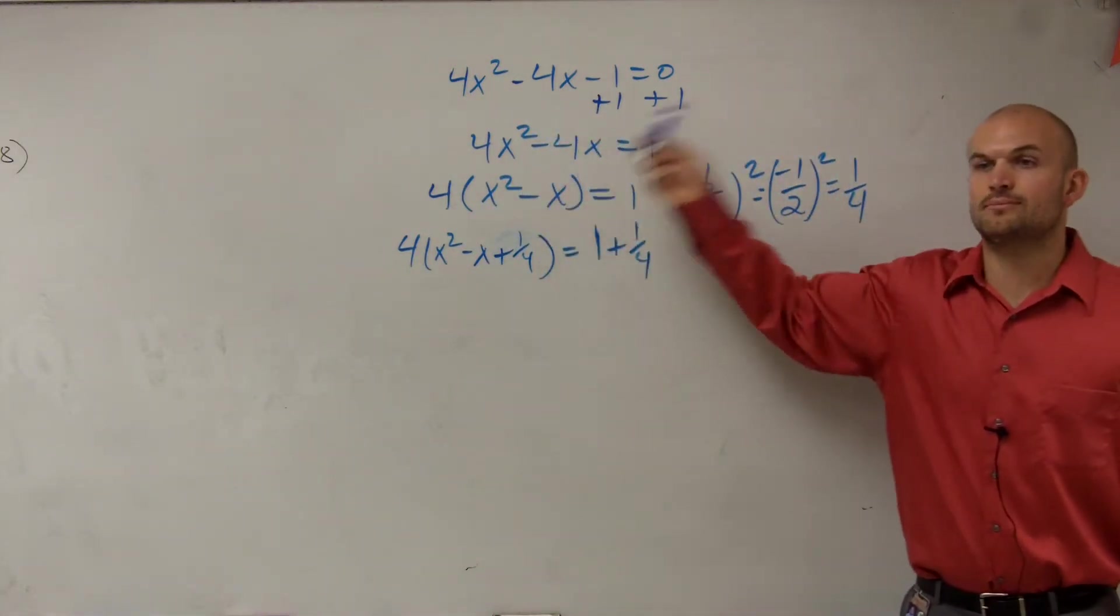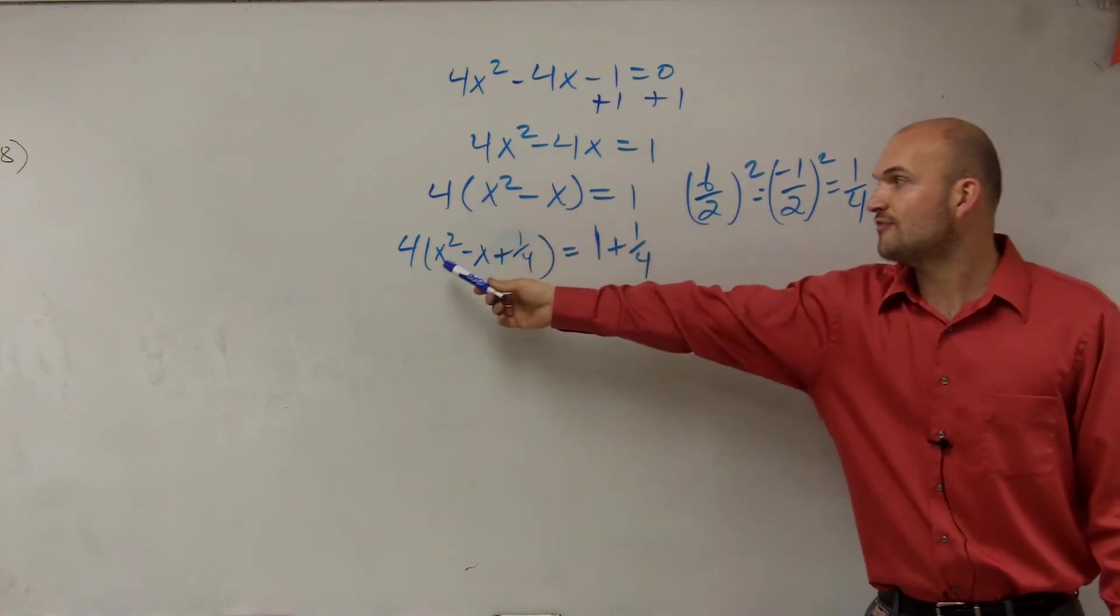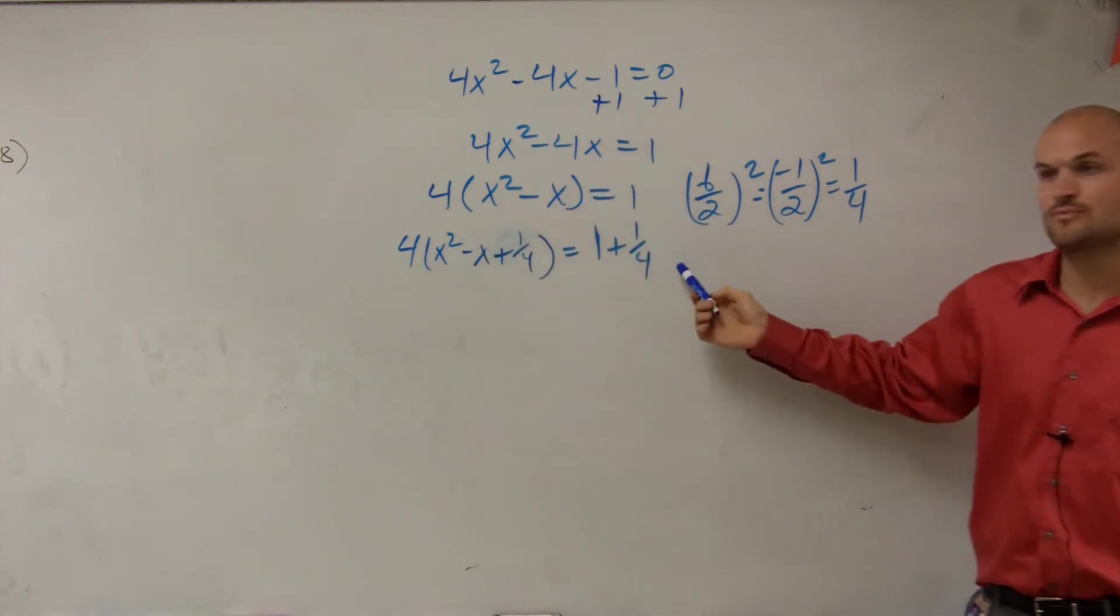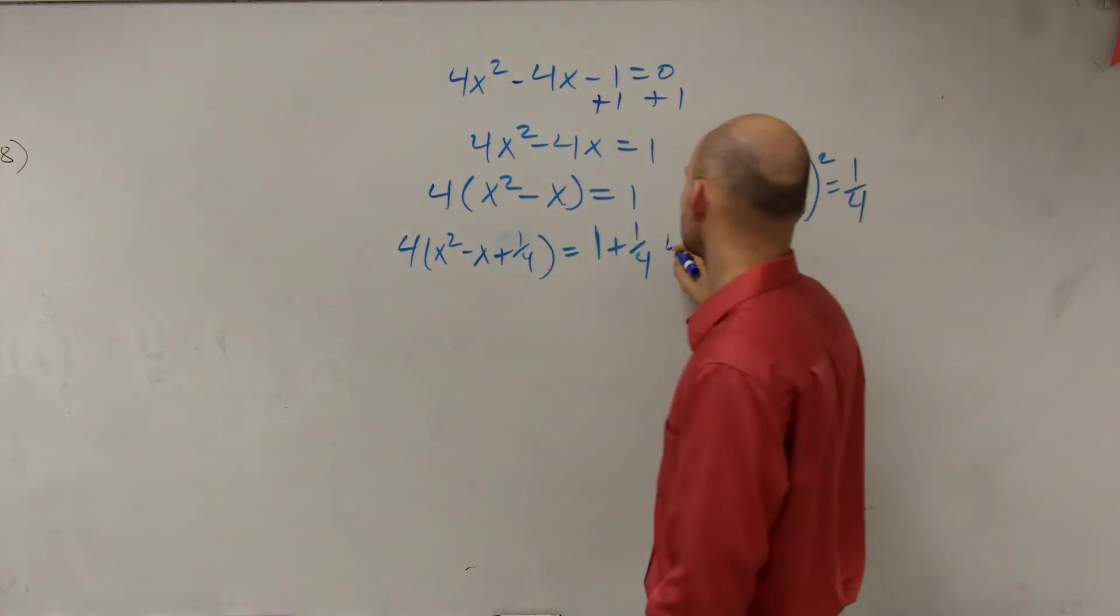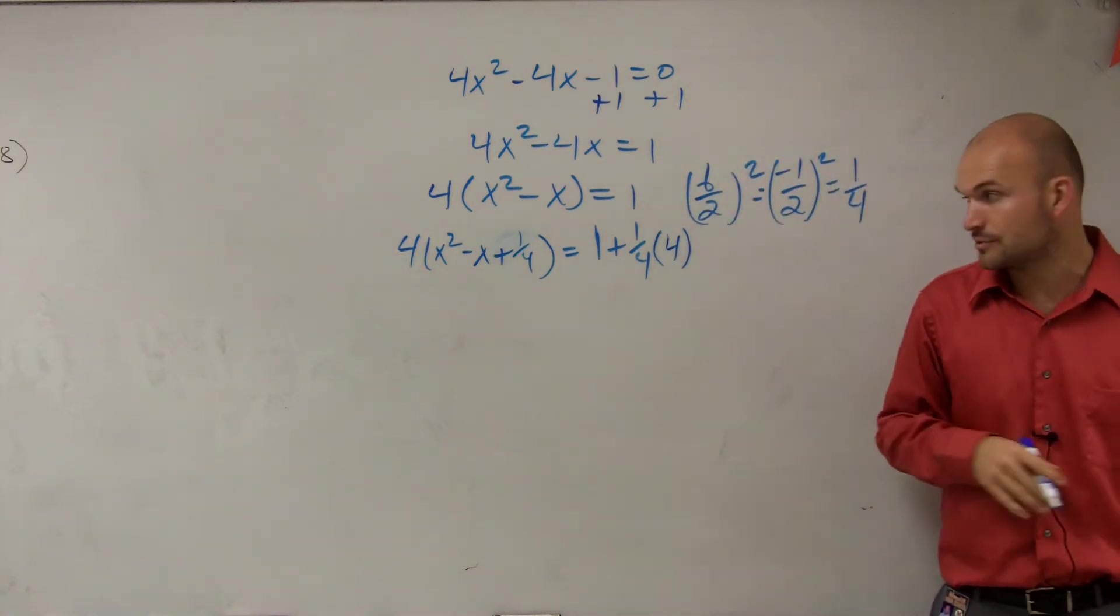So we add the 1 fourth onto both sides. But remember, since I multiplied a 4, since I'm multiplying this 1 fourth by a 4, I need to multiply by 4 over here. So you've got to make sure you multiply that 4, because that's to keep your equations equal.